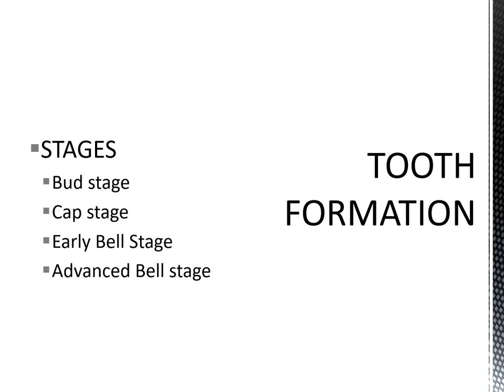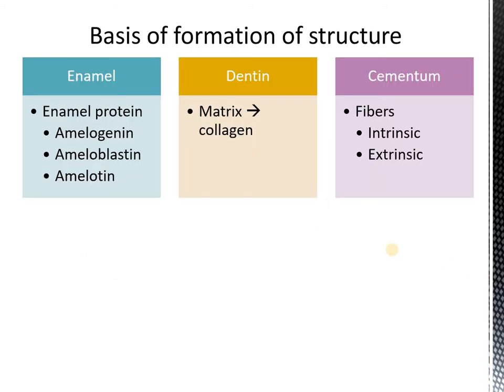Morphologically, you have the bud, cap and the bell stage. The bell is divided into early bell and late bell stage. During the late bell stage, you have cells that are differentiated into ameloblasts by the ectoderm, the odontoblasts in the endoderm, and the dental sac cells give rise to cementoblasts.